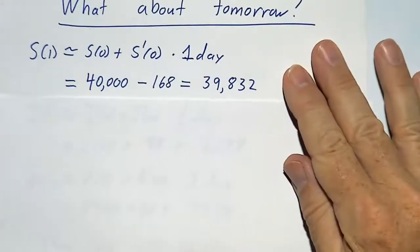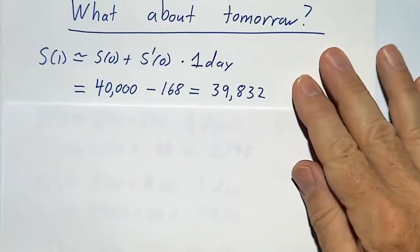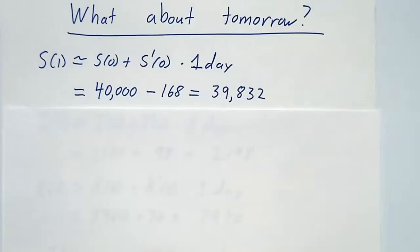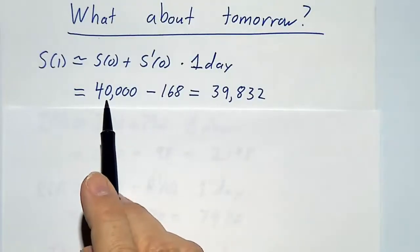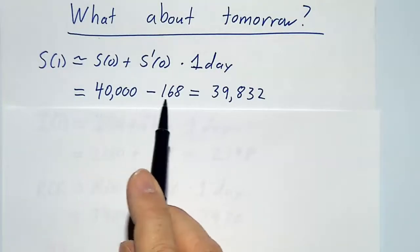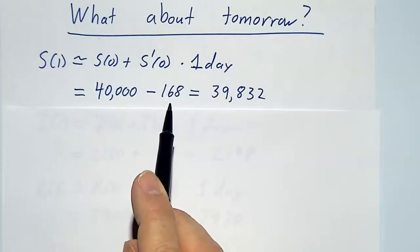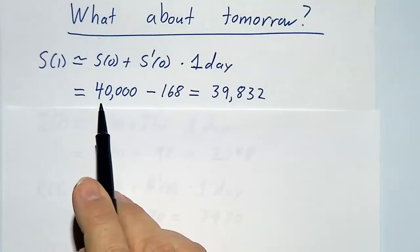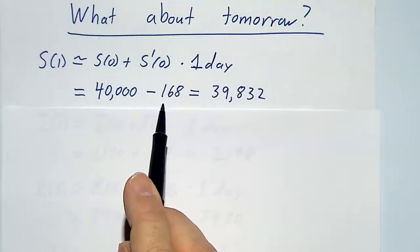Well, tomorrow, if you know the rate of change, you can figure out what's happening tomorrow. Today we have 40,000 potentials, and we're losing them at a rate of 168 today. So tomorrow we're going to have about 40,000 minus 168, that's 39,832.